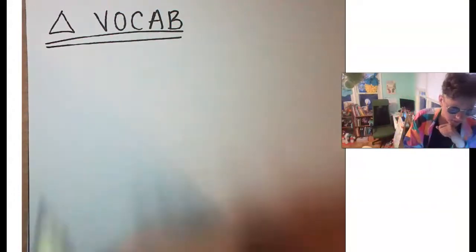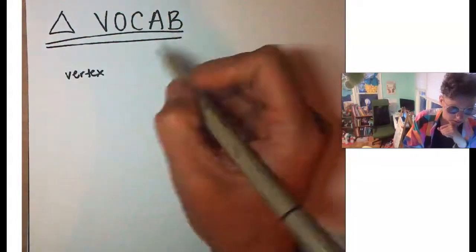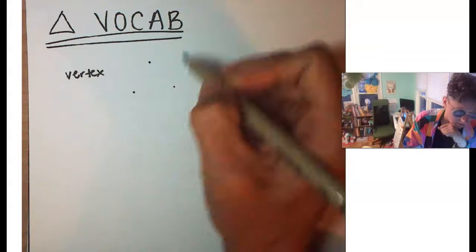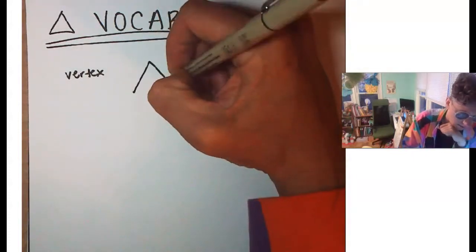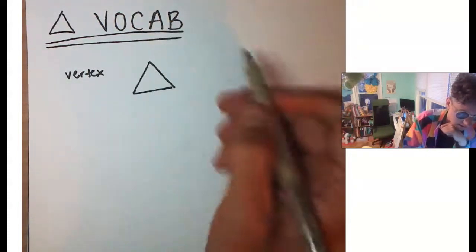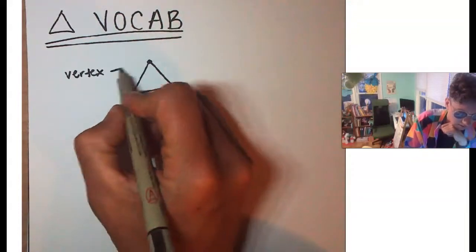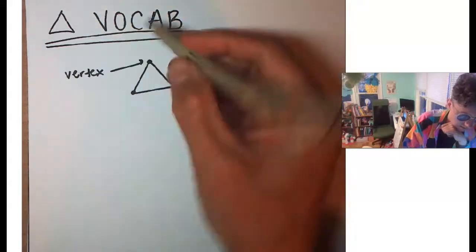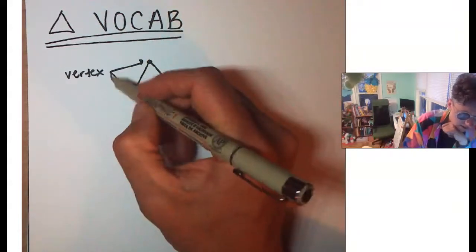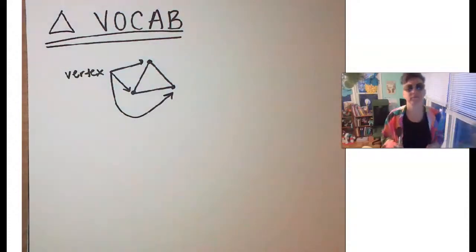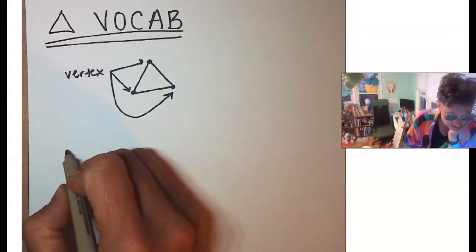Let's talk about some more triangle vocabulary. We've got the word 'vertex,' which refers to the corners of a triangle. Every triangle has three vertices — that's a vertex, that's a vertex, and that's a vertex.